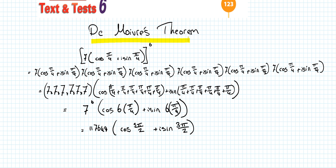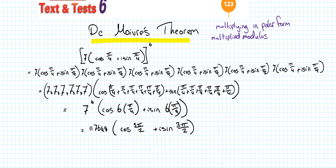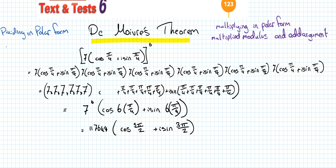Today we're going to be looking at De Moivre's Theorem. It's really an addition to what we were looking at yesterday when we were multiplying in polar form, where we multiplied moduli and added arguments. And when we were dividing in polar form, we were dividing moduli and subtracting arguments.